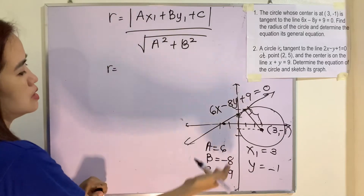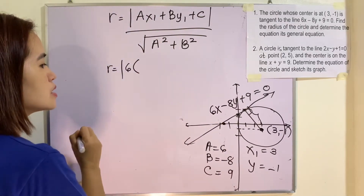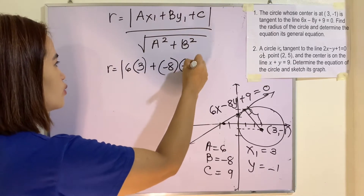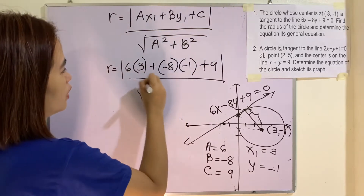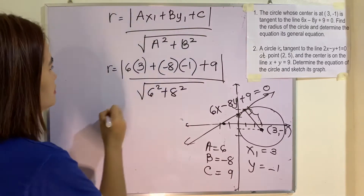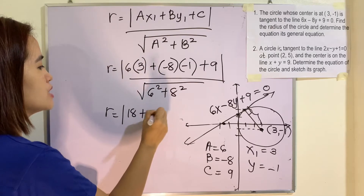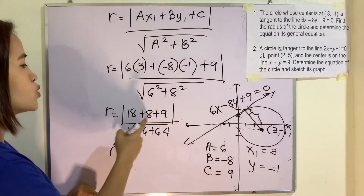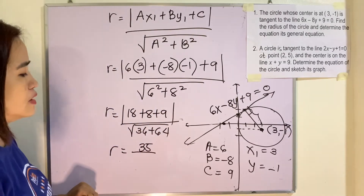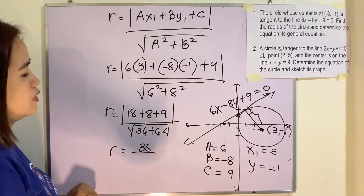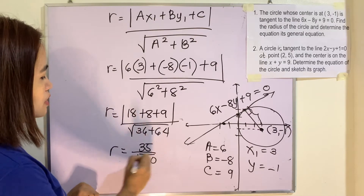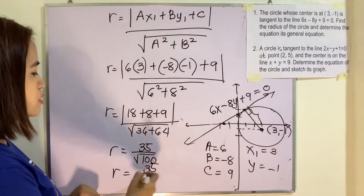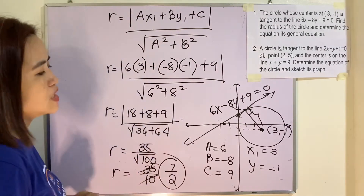Substituting: R equals the absolute value of (6 times 3) plus (negative 8 times negative 1) plus 9, over the square root of 6² plus 8². That gives 18 plus 8 plus 9 over the square root of 36 plus 64, which is 35 over the square root of 100, or 35 over 10. Both are divisible by 5, giving R equals 7 over 2.